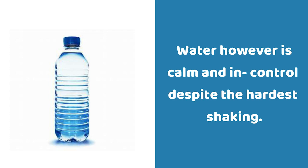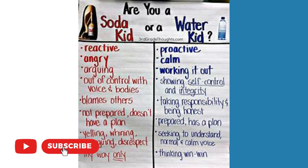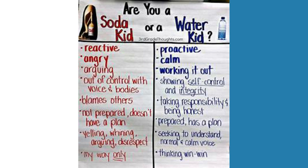Are you a soda kid or a water kid? A soda kid is reactive — angry, arguing, out of control with voice and body, blames others, not prepared, doesn't have a plan, yelling, whining, arguing, disrespectful. A water kid is proactive — calm, working things out, showing self-control and integrity, taking responsibility, being honest, prepared, and has a plan.